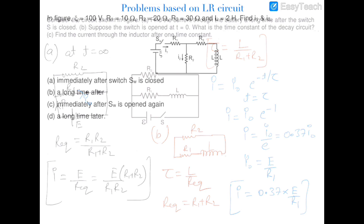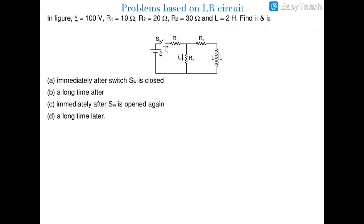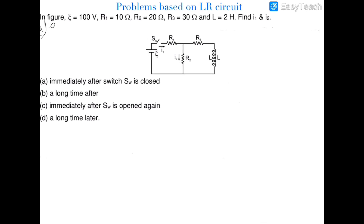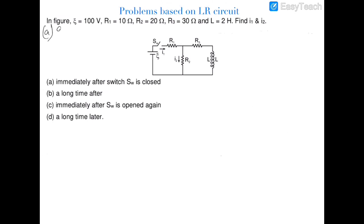Now we move on to the next question. There is a cell of 100 volts with other element values given. We have to find currents i1 and i2 in two cases: first, immediately when the switch is closed. For case (a), drawing the circuit at t = 0 when the switch is just closed.